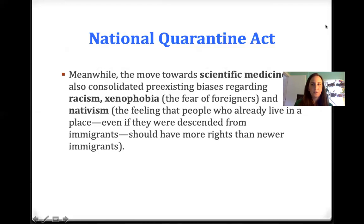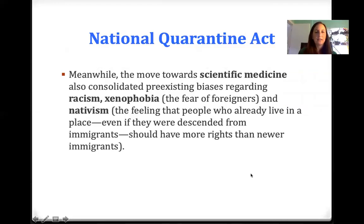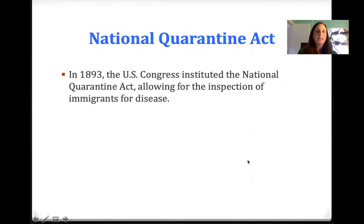Meanwhile, the move towards scientific medicine also consolidated pre-existing biases regarding racism, xenophobia — the fear of foreigners — and nativism, which means the feeling that people who already live in a place, even if they were descended from immigrants, should have more rights than newer immigrants. In 1893, the U.S. Congress instituted the National Quarantine Act, which allowed for the inspection of immigrants for disease.